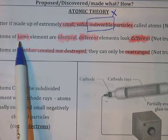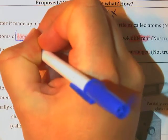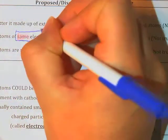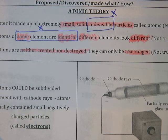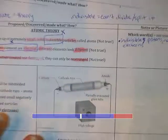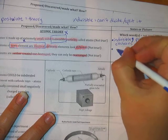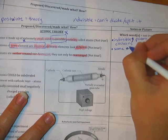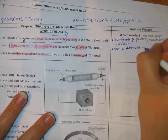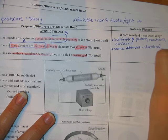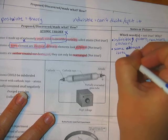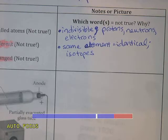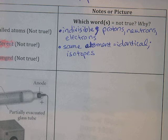His next postulate had something wrong with it: atoms of the same element are identical. That part — same element, identical — is wrong, and he had no way of knowing that. It turns out that same elements being identical is wrong because of something called isotopes, which we're going to talk about more in a bit. Isotopes are atoms of the same element that are different from each other.